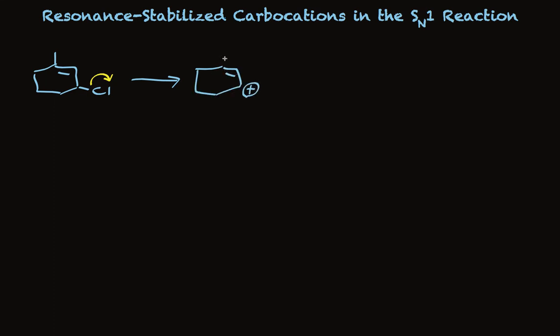This is an example where we have a positive charge on a carbon that has a double bond attached to it. So we'll see resonance stabilized carbocation. As these pi-electrons slide over to make the second resonance structure and we'll have positive charge on two different carbons.